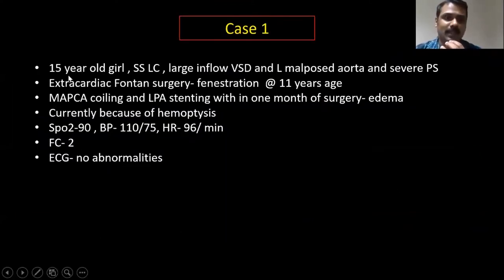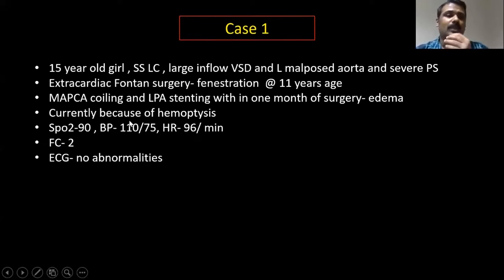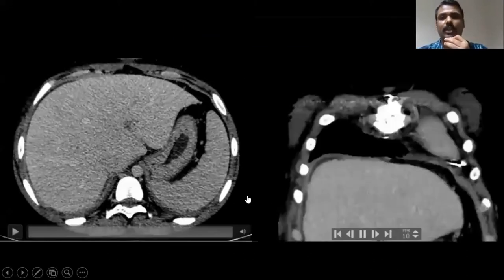This is one example of a 15-year-old girl who underwent extracardiac Fontan surgery at 11 years of age for corrected VSD and malposed great arteries. She also underwent MAPCA coiling plus left pulmonary artery stenting for pulmonary edema as well as pleural effusion, and currently she presented with hemoptysis. Her vitals and all other basic investigations were normal.